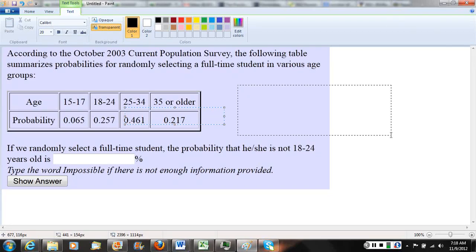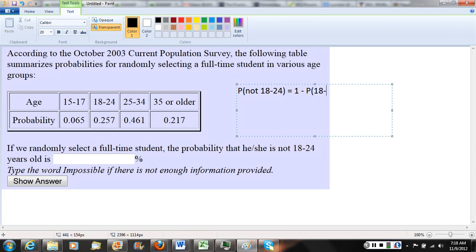So let's write this up here. We can say the probability that the person is not 18 to 24 is equal to 1 minus the probability that the person is 18 to 24. So there's that complement rule. Whenever you have the word not, you can actually find the probability that it does happen and subtract from 1.